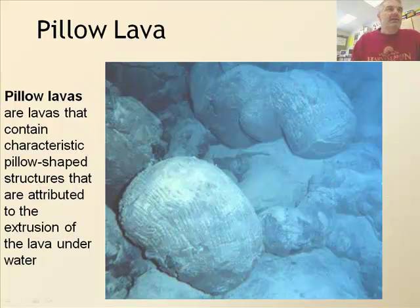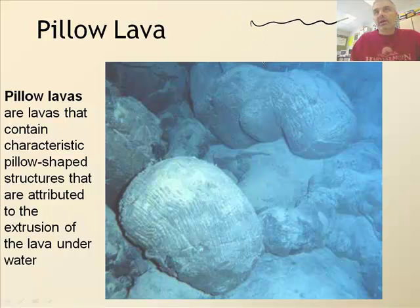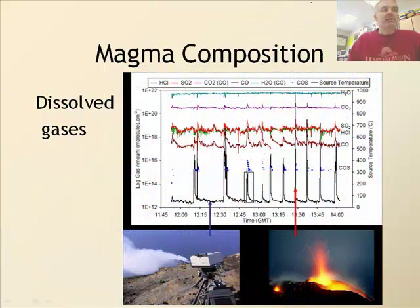Pillow lava is a funny kind of lava. These are lavas that contain characteristic pillow-shaped structures attributed to the extrusion of lava underwater. When a volcano on the ocean floor erupts, the lava comes up and cools so quickly when it hits the water that it forms pillow shapes. When this happens, you also get tons of gas because the very hot lava boils the water.